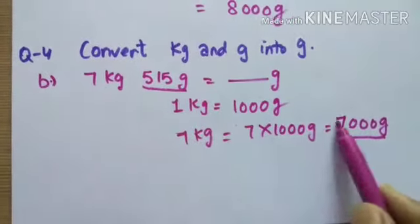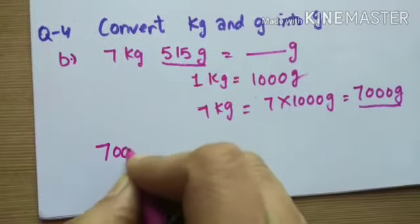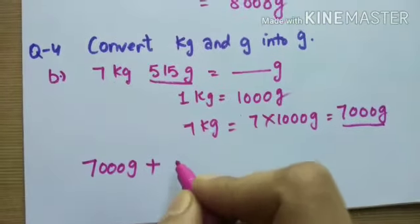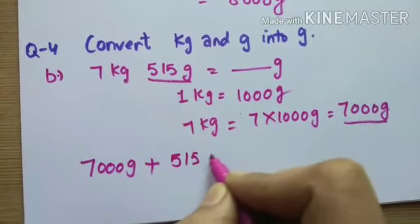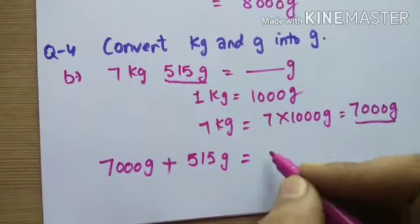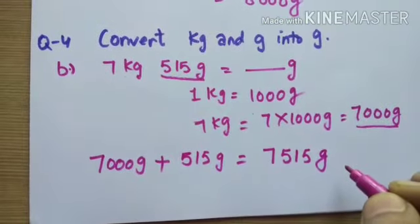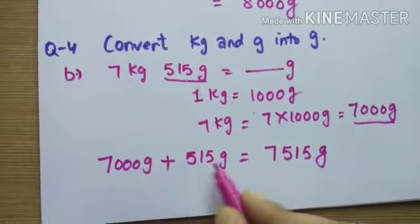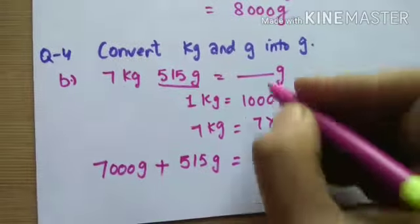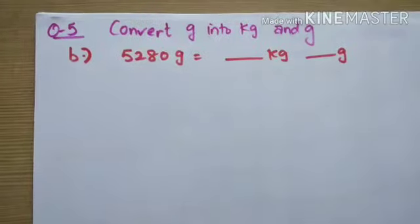Now we add both the same units: seven thousand grams plus five hundred fifteen grams. Our final answer is seven thousand five hundred fifteen grams. Both units are converted to grams to give the complete answer.